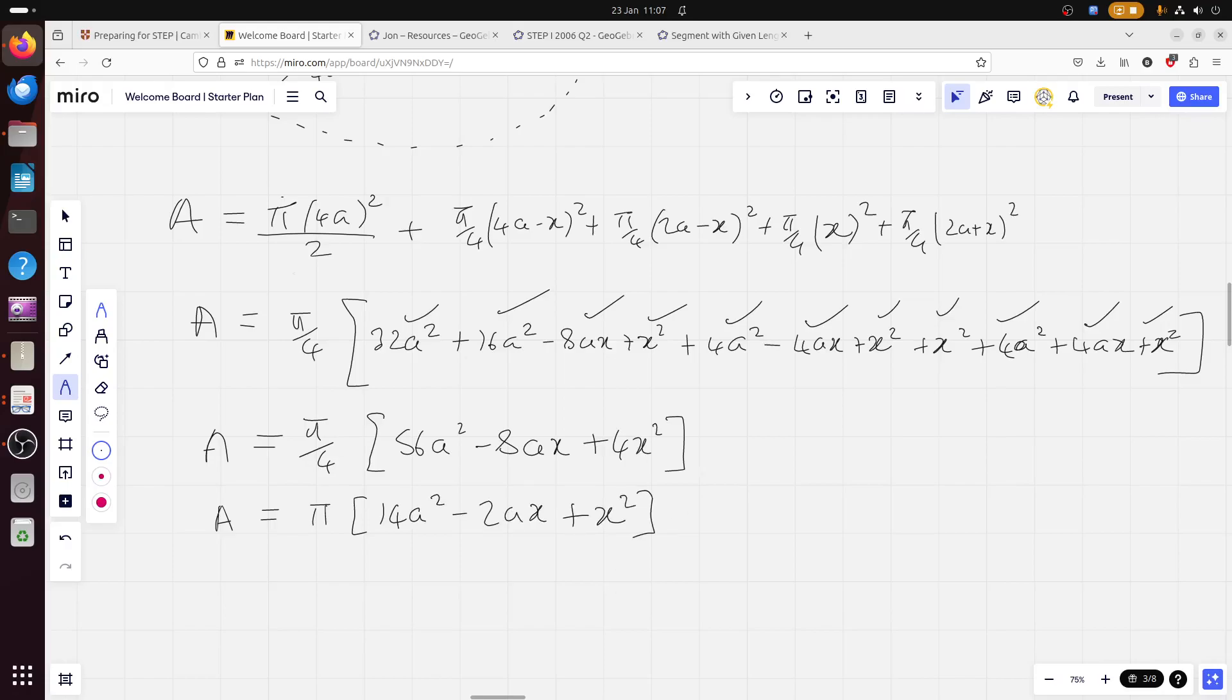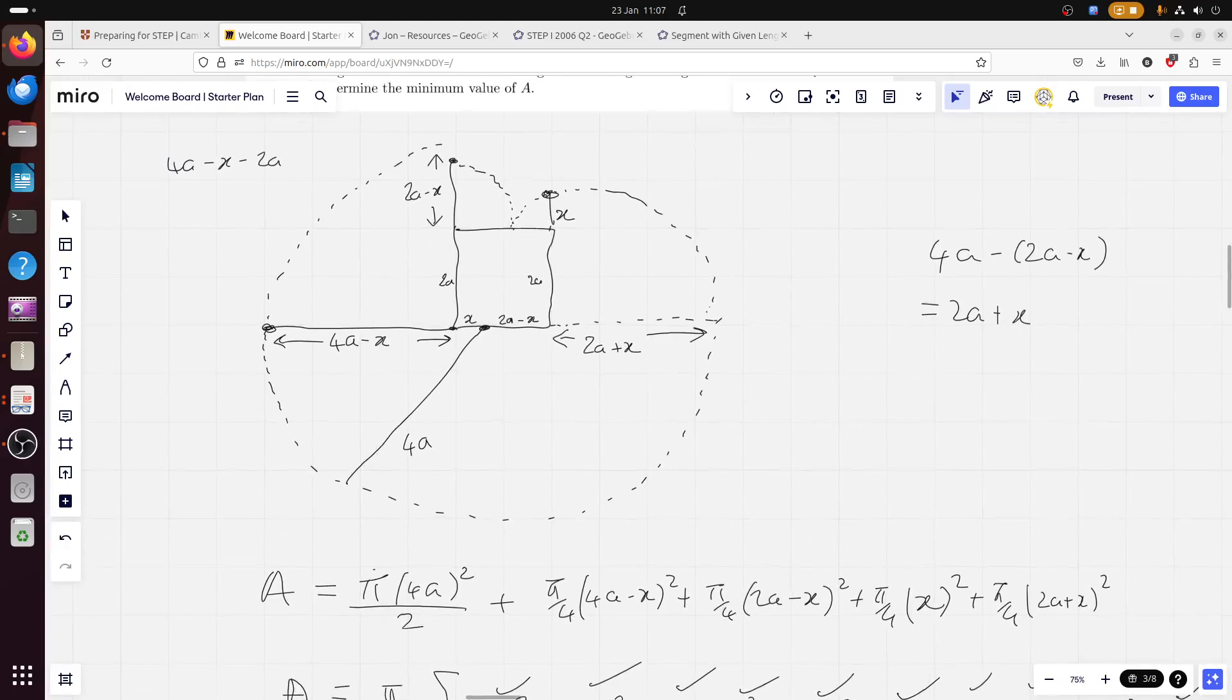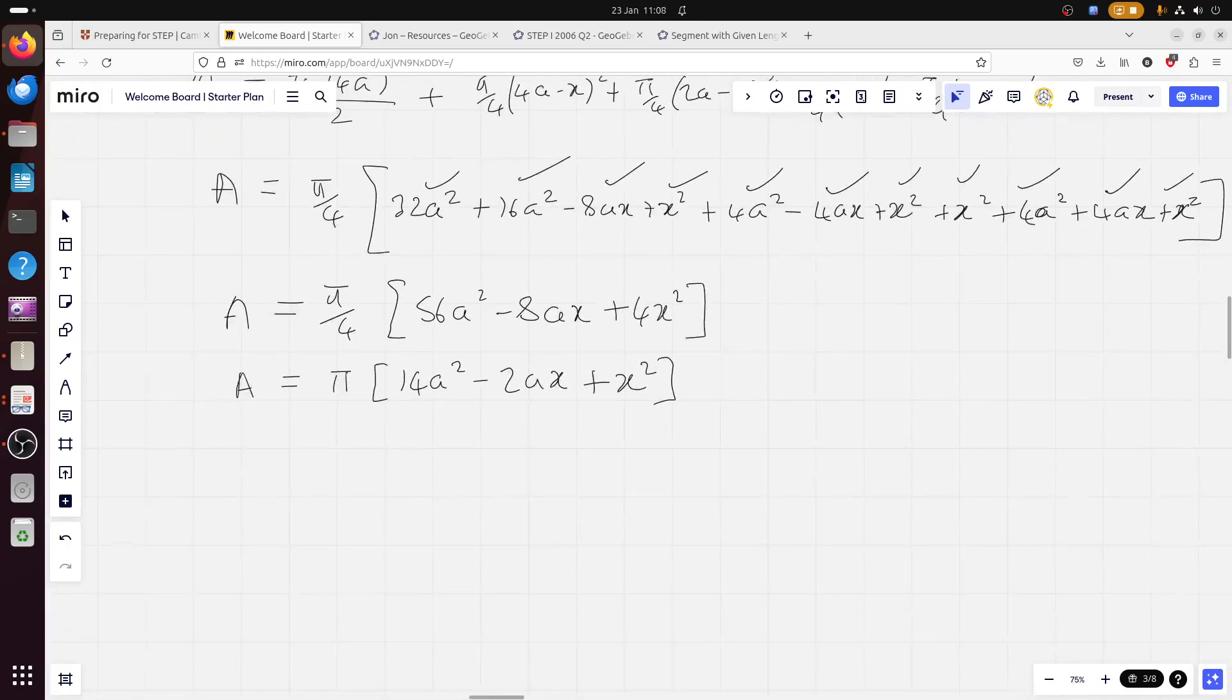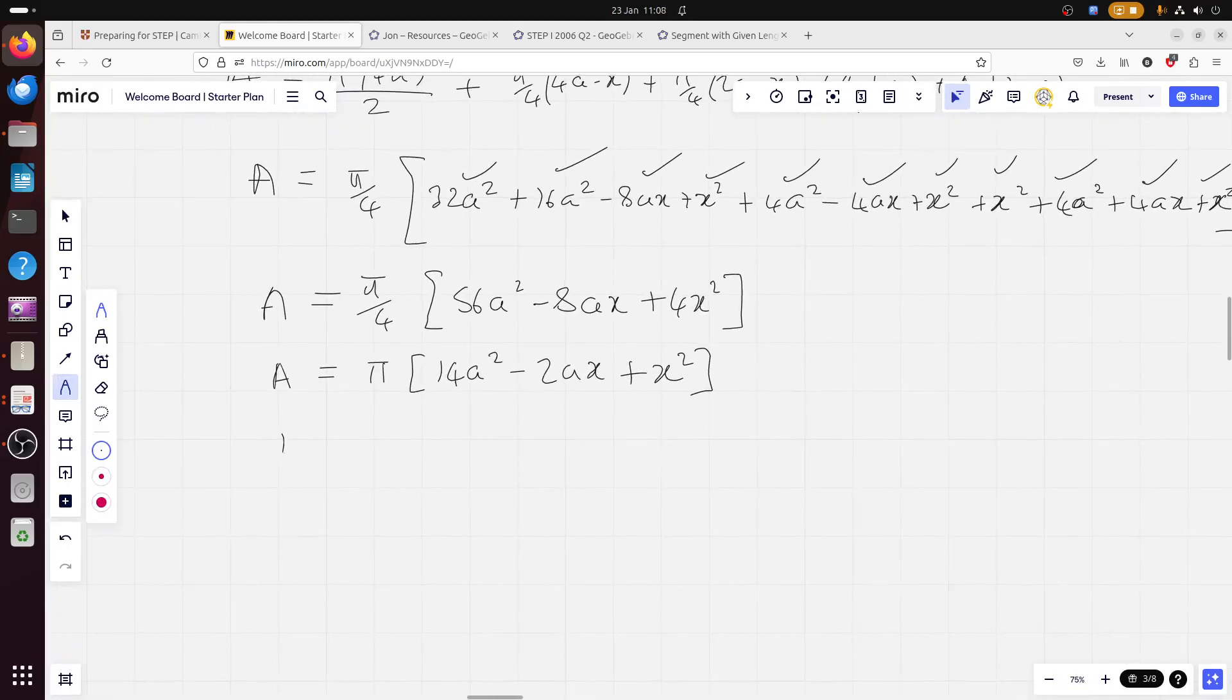Now, that's a quadratic in x. Remember that a is kind of like your fixed constant here, because they just said the barn is of width 2a. x is the thing which is varying, which is just where you're tethering the rope. Let's vary where we're tethering the rope and keep the barn size fixed. That makes sense. So, in other words, what have we got here? Well, we've got a quadratic, and we're trying to find minimums and maximums. So, I'm going to complete the square. Yeah, definitely the way to go. You could use calculus. Of course, you could use calculus.